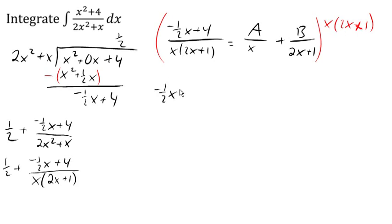When we multiply this times the A over x terms, the x's cancel and 2x plus 1 remains multiplying A. When we multiply here, the 2x plus 1 cancels and the x remains multiplying B. Now there's a couple different tactics we can take. We're going to take the tactic of picking some values for x.